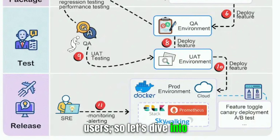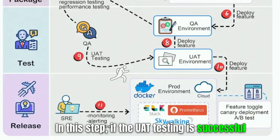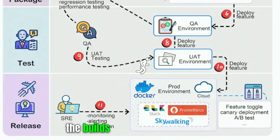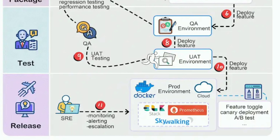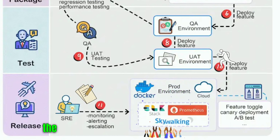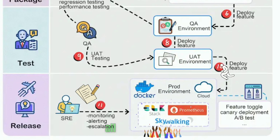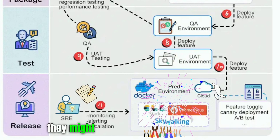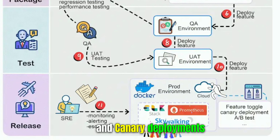In step nine, if the UAT testing is successful, the builds become release candidates, which means they're ready to be deployed to production. However, to mitigate the risks of a new release, the team might not want to deploy to all users at once. Instead, they might use techniques like feature toggles and canary deployments. Feature toggles allow the team to turn features on and off for different groups of users.